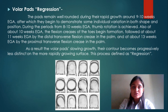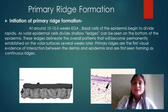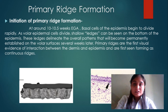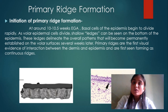Primary ridge formation: cells of the epidermis begin to develop rapidly as volar epidermal cells divide — cell or ridges can be seen on the bottom of the epidermis. At 10 to 10.5 weeks of pregnancy, initiation of primary ridge development begins. The basal cells of the epidermis divide rapidly and the ridges begin to appear on the bottom of the epidermis.